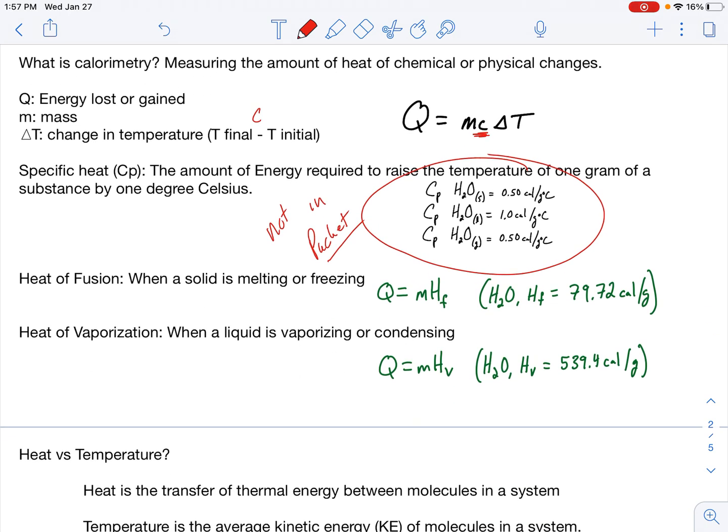Heat of fusion and heat of vaporization. Those are in your packet. That's only for water though. So if I give you a substance besides water, I would have to provide that information to you. Now, we might have noticed a couple things here. I have some formulas that I'm going to be using. Depending upon where you are in the heating curve, you have to use a different formula.